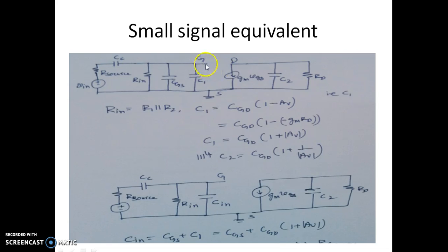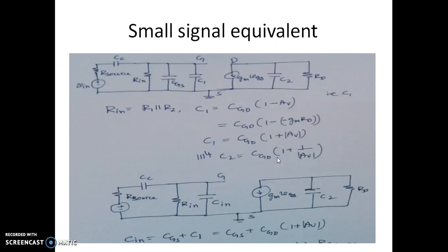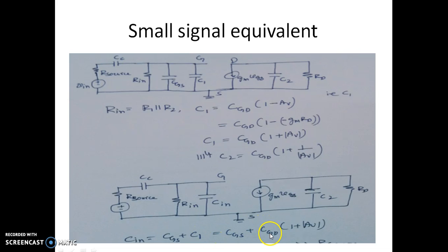So CGD, which was floating between gate and drain, is now represented by C1 and C2 at the gate and drain nodes respectively. The biasing resistors R1 parallel R2 are represented by a single resistor Rin. C1 and CGS are in parallel, combined as Cin = CGS + C1, where C1 = CGD × (1 + |AV|). And C2 = CGD × (1 + 1/|AV|).